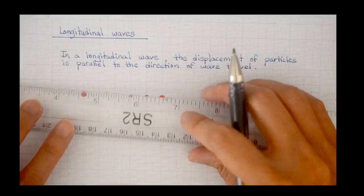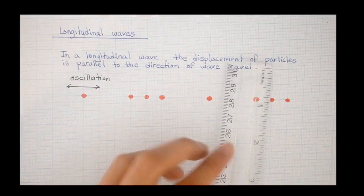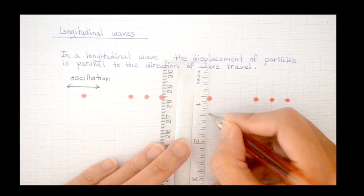If we draw the side view of a slinky making a longitudinal wave, it might be easier to spot the region where the wave is squashed and where the wave is stretched.